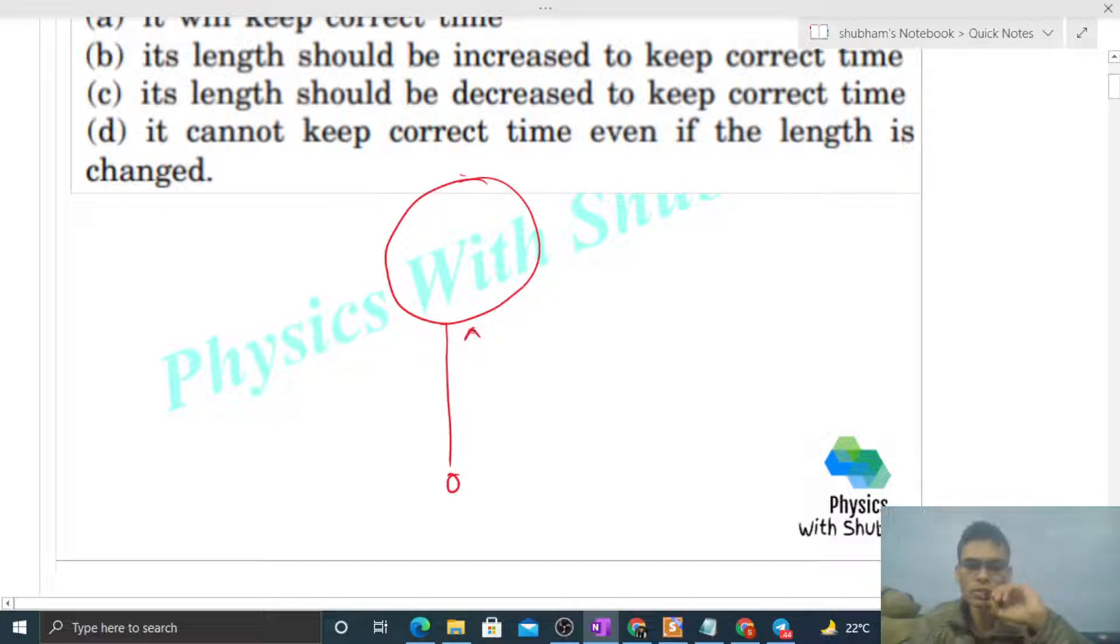This is the pendulum. Let's say the length of the pendulum is l. What will be the time period of this pendulum? That will be 2π√(l/g). Now if we take this clock to high altitudes, then what will happen?